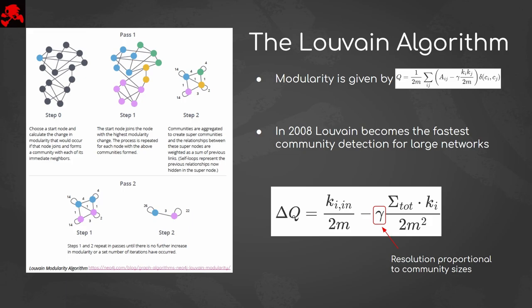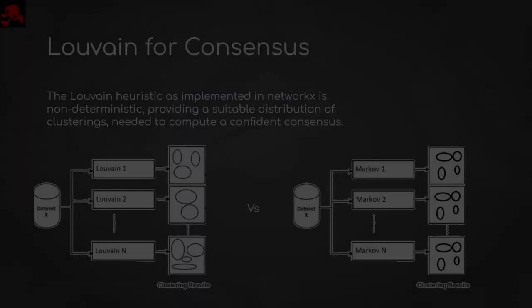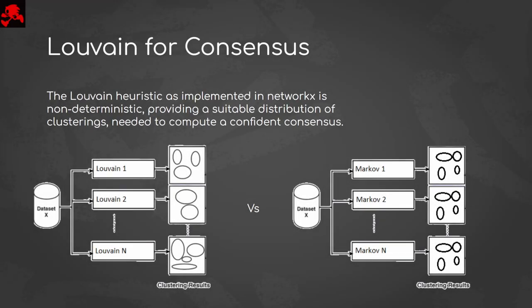The intricacies of Louvain were discussed in class as well as being widely available in the literature, so we will just note that it is a non-deterministic procedure. This means that several attempts at clustering a network will result in several formations of communities with similarly high modularity scores, from which our consensus function will be able to determine a closer approximation to the true clusters.